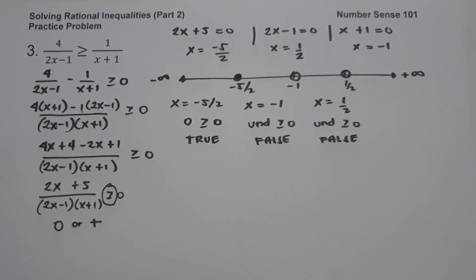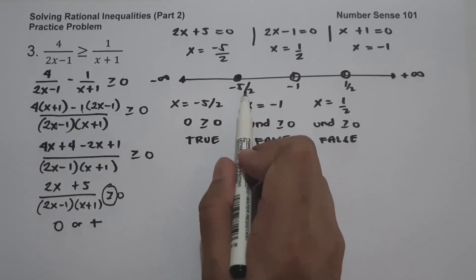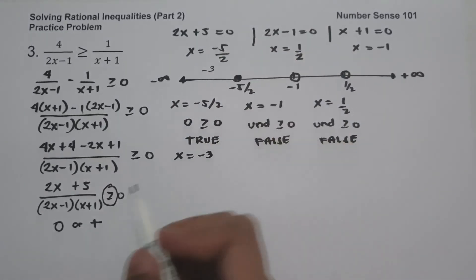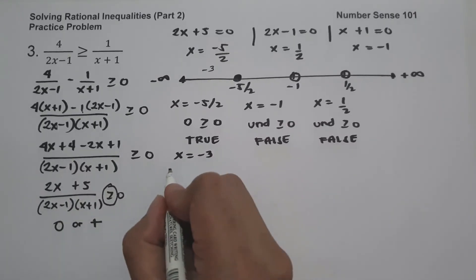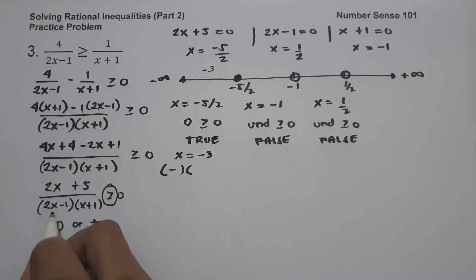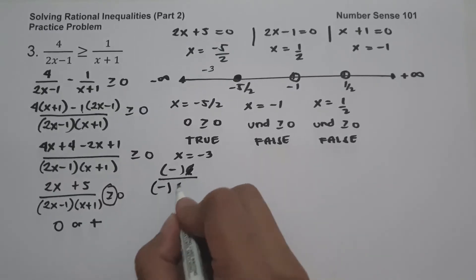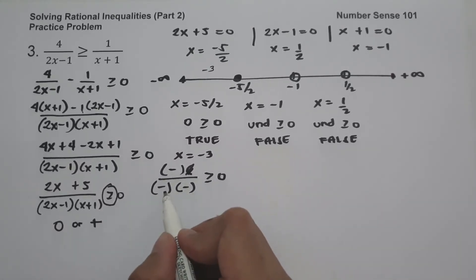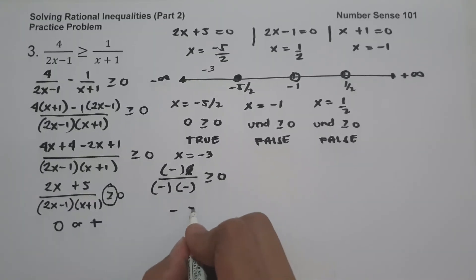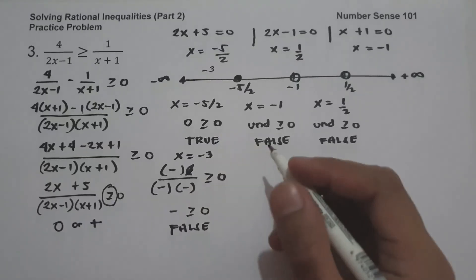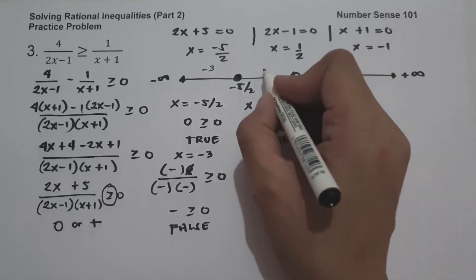Now we check which regions are included. Note that negative 5/2 equals negative 2.5. For a number less than negative 5/2, say x equals negative 3: the numerator 2(−3) + 5 equals negative 1, which is negative. The factor (2(−3) − 1) is negative, and (−3 + 1) is negative. Negative divided by negative times negative — negative over positive is negative ≥ 0 — so this is false. For a number between negative 5/2 and negative 1, say x equals negative 2.